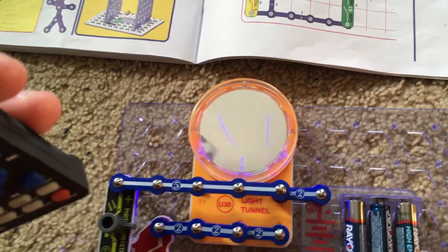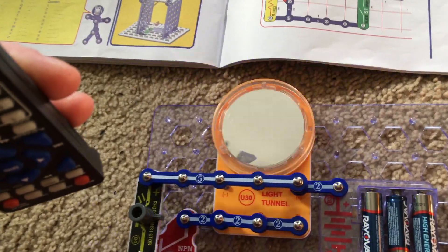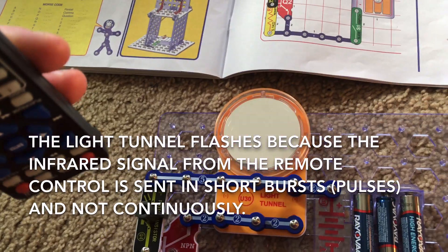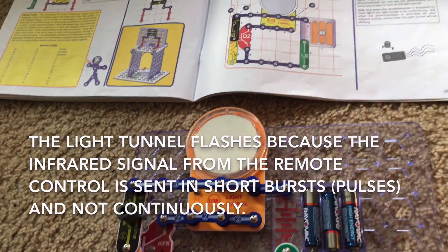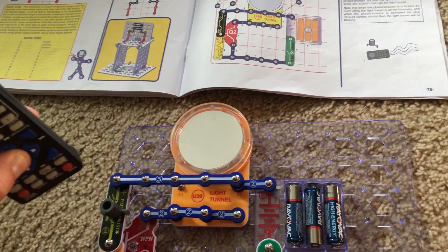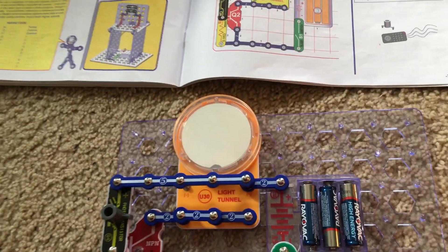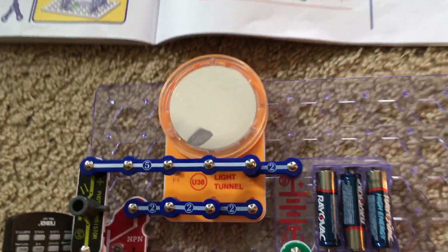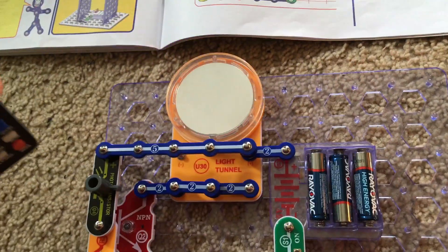The light tunnel will flash as the infrared light from the remote reaches the photo transistor. Like I mentioned in previous projects using a remote control, the remote does not send out a continuous light signal. The infrared signal comes in a series of pulses, so the light tunnel is not going to be on continuously when activated by the remote.